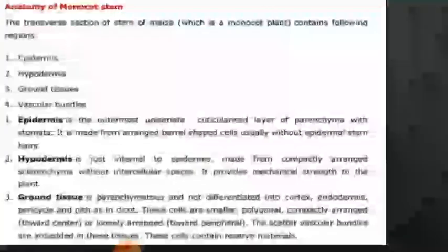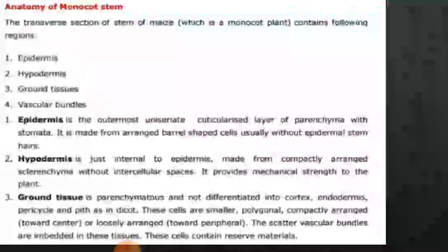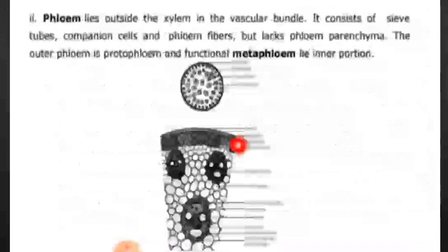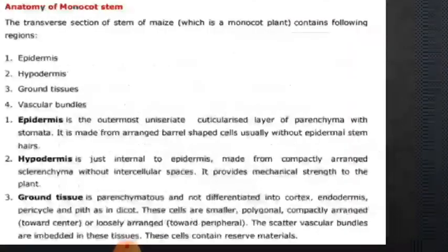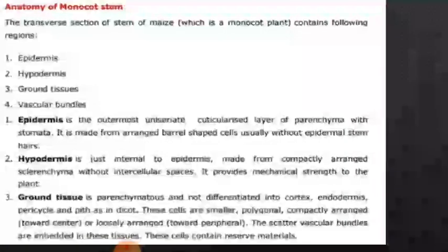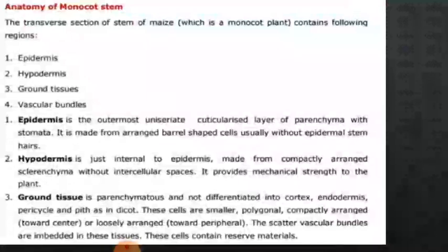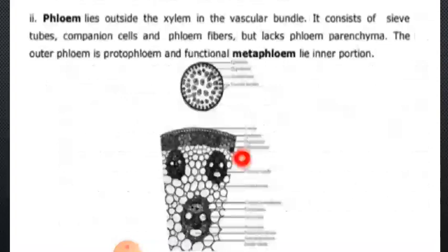Number three is ground tissue. It is parenchymatous and not differentiated into cortex, endodermis, pericycle, and pith as in dicots. The ground tissue is not differentiated into cortex and endodermis. Pericycle is not found here. The cells are smaller polygonal compact layers. The vascular bundles are embedded in this tissue. The cells contain a reserve of food.